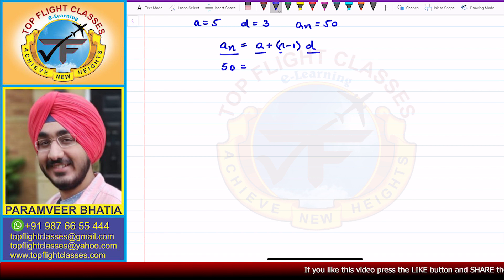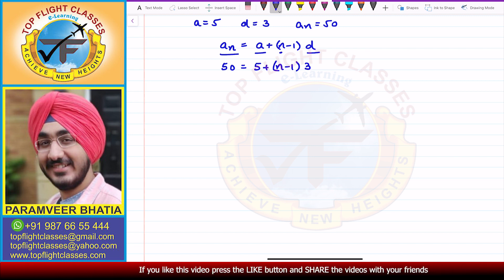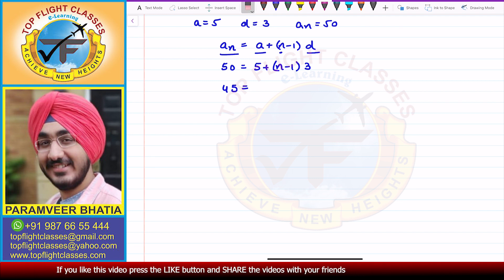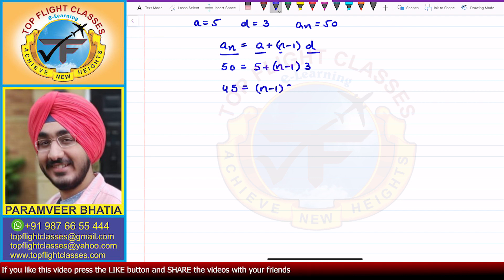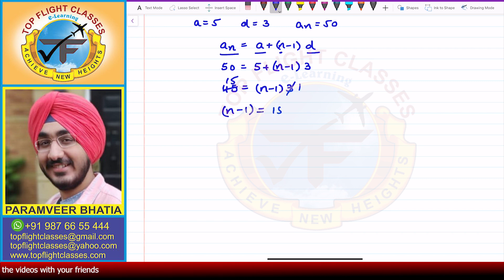So 50 will be equal to 5 plus N minus 1 times 3. So here, 50 minus 5, which is 45, is equal to N minus 1 times 3. Dividing both sides by 3, we get N minus 1 is equal to 15.